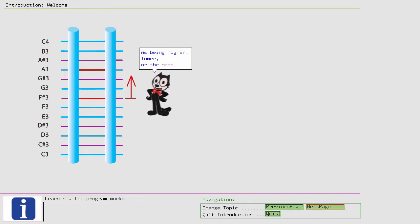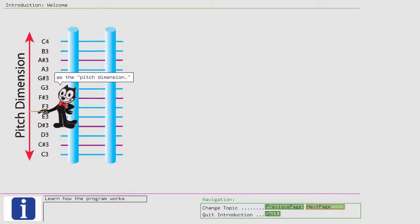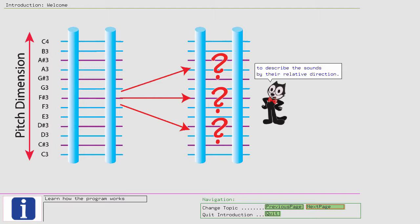As being higher, lower, or the same. This classification is the most basic skill of relative pitch. We can simply look at those pitch characterizations as the pitch dimension. In this dimension, the basic task is to describe the sounds by their relative direction.